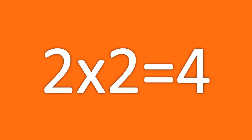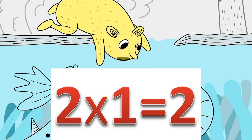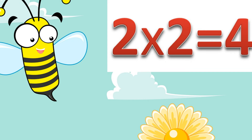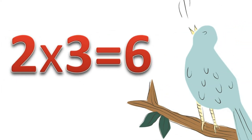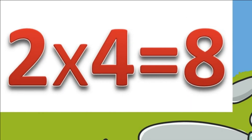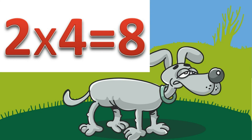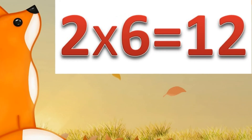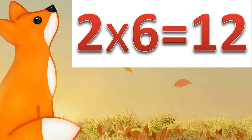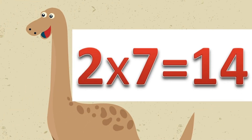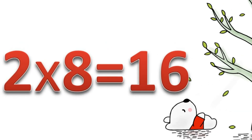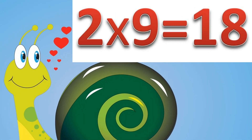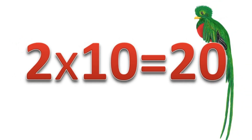Let's repeat the table one more time. Two times one. Two times two: four. Two times three: six. Two times four: eight. Two times five: ten. Two times six: twelve. Two times seven: fourteen. Two times eight: sixteen. Two times nine: eighteen. Two times ten: twenty.